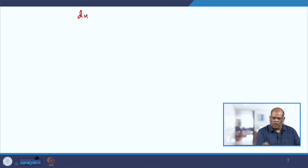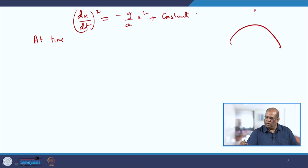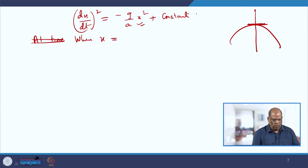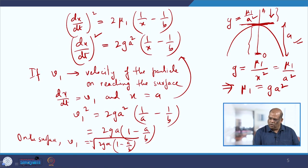To find the constant, we use the initial condition at the surface: when x = a, the velocity is v₁ = -√(2ga(1 - a/b)) as already calculated. Substituting into our equation: 2ga(1 - a/b) = -(g/a)·a² + constant, which gives constant = 2ga - 2ga²/b + ga = 3ga - 2ga²/b = ga(3 - 2a/b).